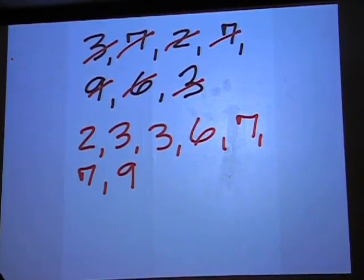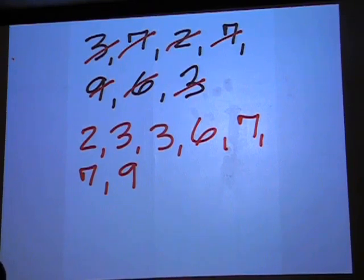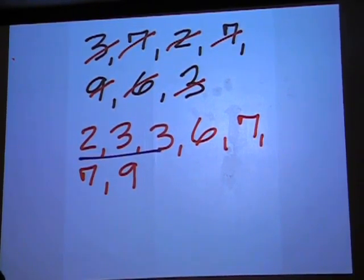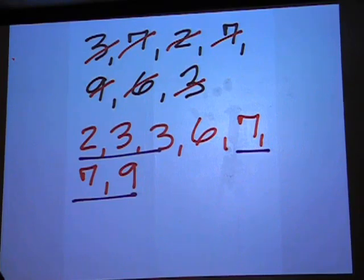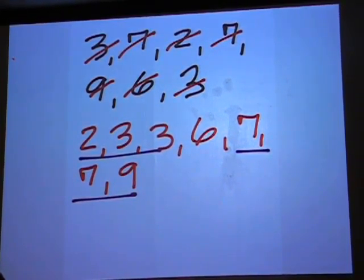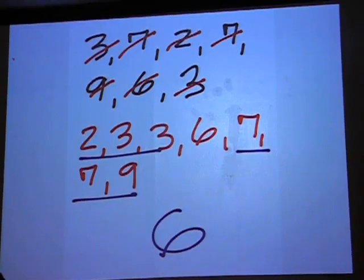Half of 7 is 3.5. So that means we're going to have to have 3 numbers on one side, and then 3 numbers on the other side, leaving us with a middle number of what? 6 is the median.